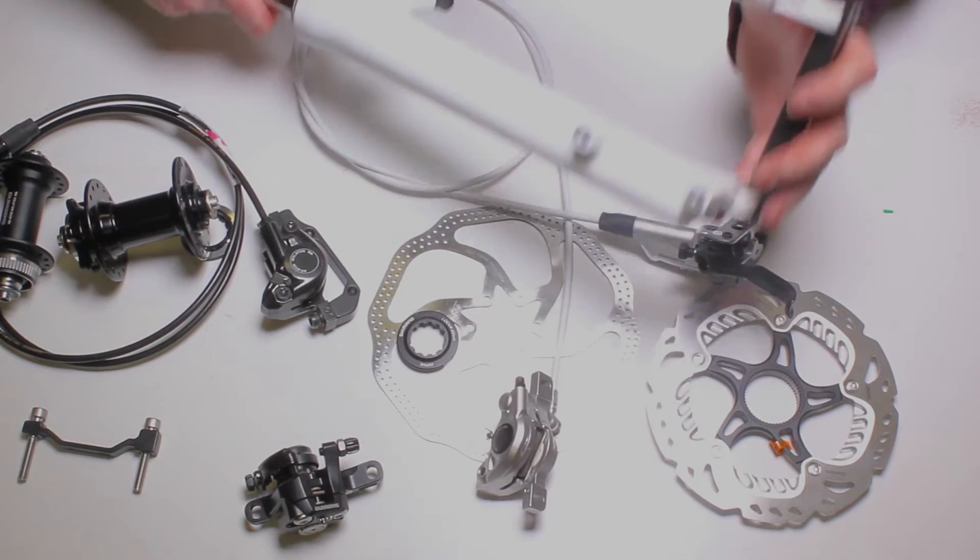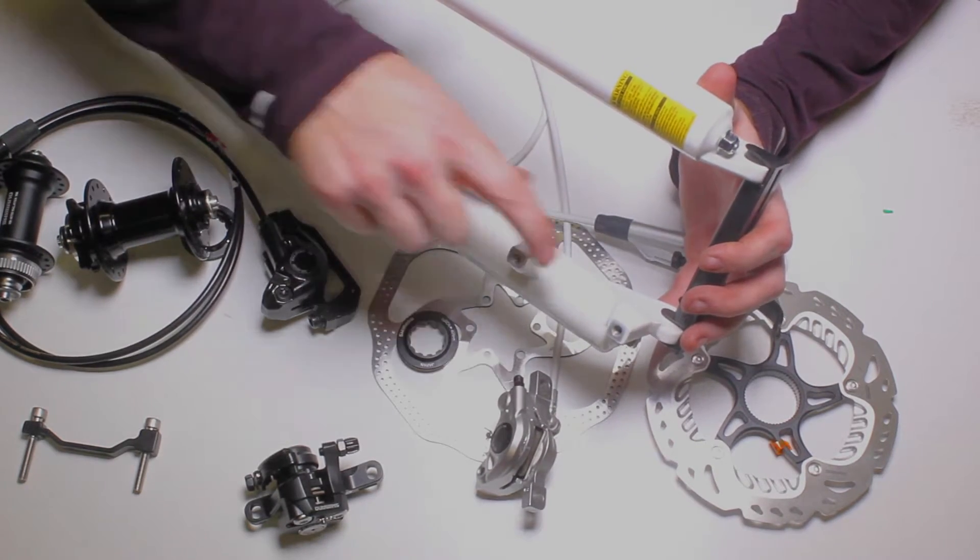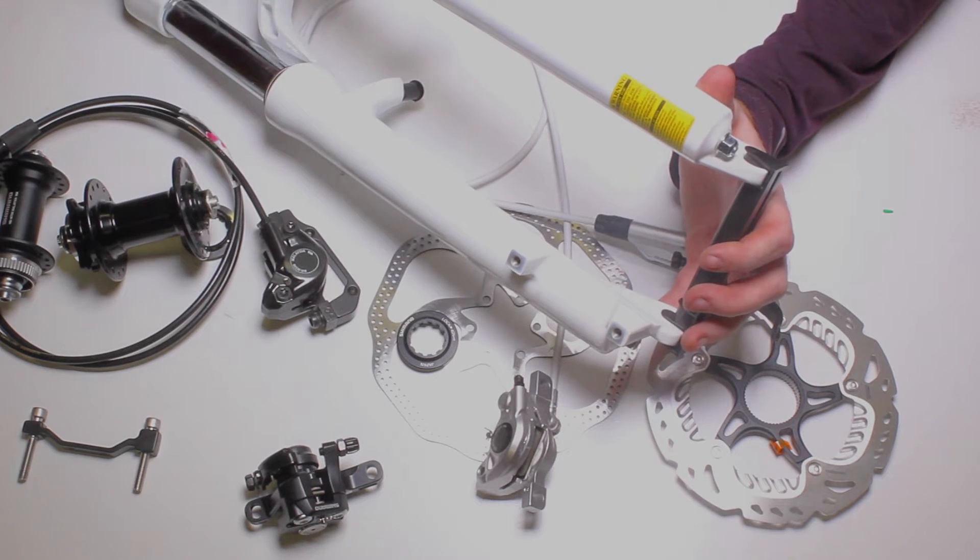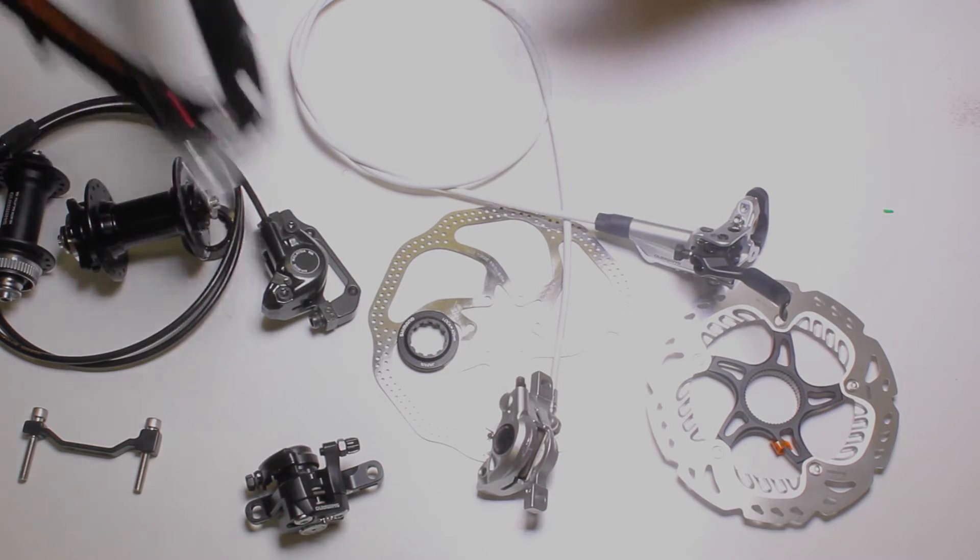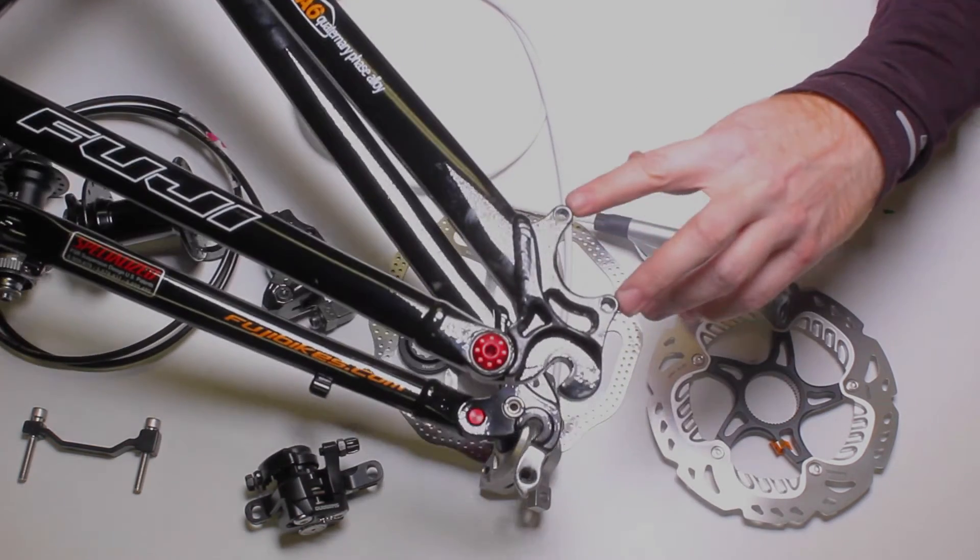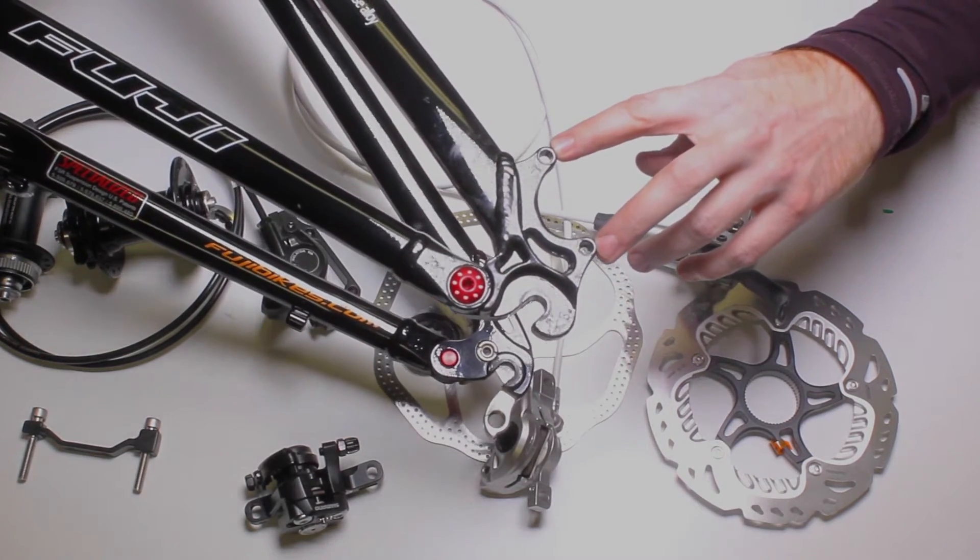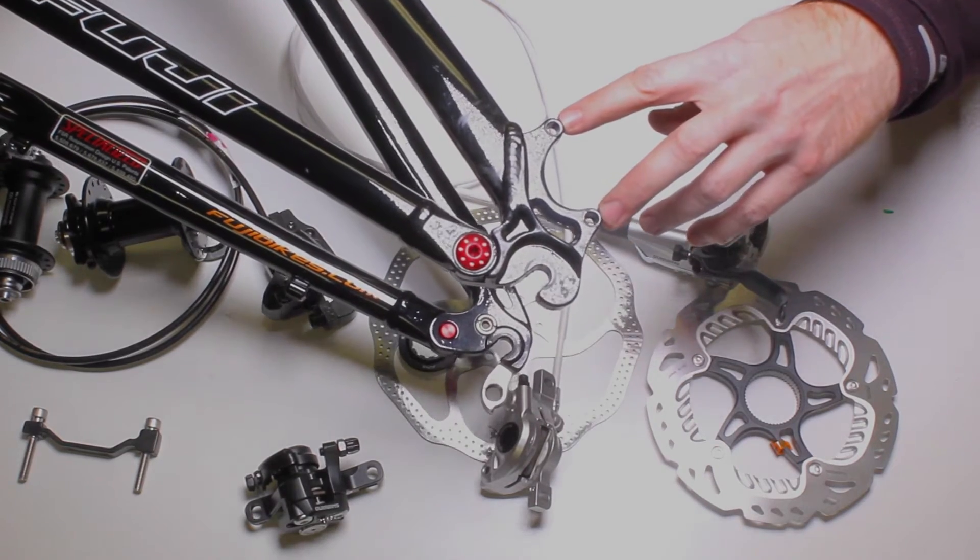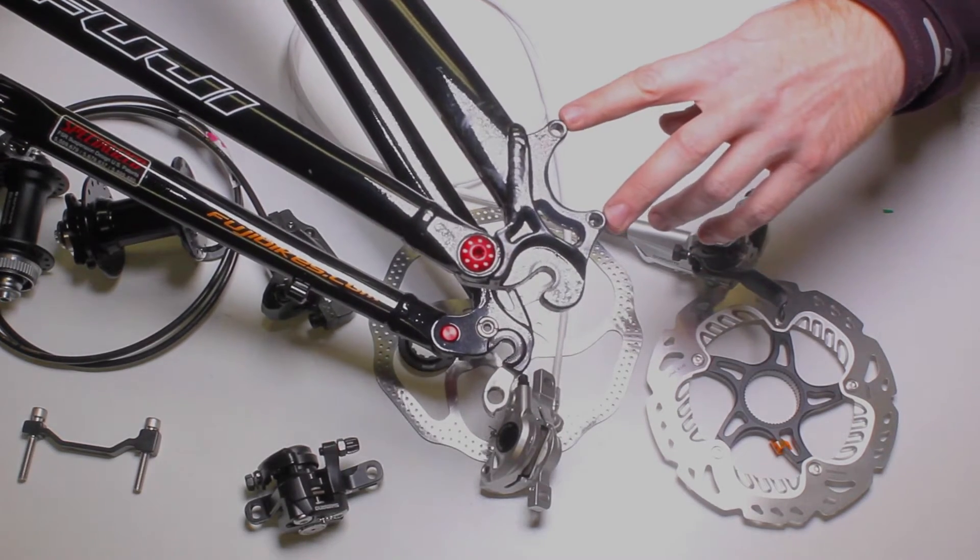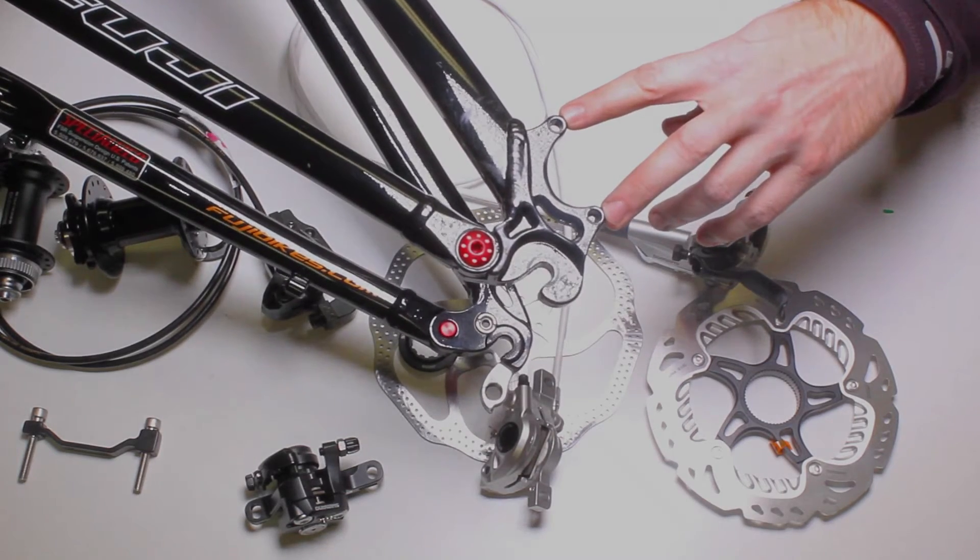Now we must pay attention to what we have on our frame to accept calipers. This happens to be a post mount. This goes on a fork. You can find this style on your frame as well. And this happens to be an IS mount. You quite often see these on frames, but you might see this on your fork as well. Or you might see post mount on here. You must have something like this in order for you to run disc brake calipers on your bike.